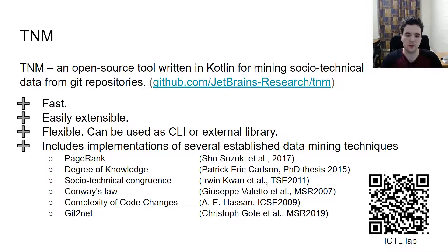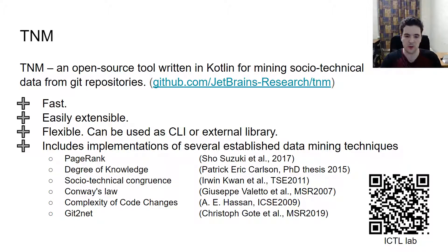At the moment, our tool includes six established data mining techniques: Page Rank for calculating the influence of bug-fixing commits; Degree of Knowledge for calculation of developers' knowledge between files; Social Technical Congruence to get coordination needs between developers; Conway's Law, which evaluates structural similarities between developers' communication and project dependencies; Complexity of Code Changes, which can be used in predicting future defects in files; and Git to Net for building collaboration networks.